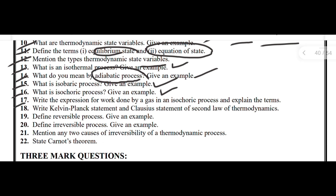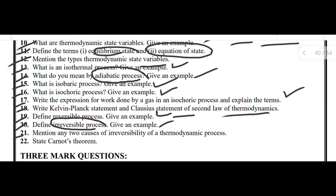For work done by a gas in an isochoric process, explain the terms. Next: write the Kelvin-Planck statement and Clausius statement of the second law of thermodynamics. Define reversible process and give an example. Define irreversible process and give an example. Mention any two causes of irreversibility of a thermodynamic process. Last: state Carnot's theorem.